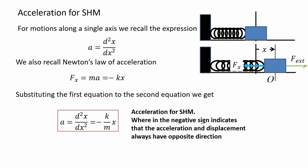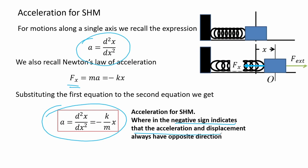We also consider the acceleration for simple harmonic motion. For linear motion along a single axis, we recall the acceleration equation — the second derivative of displacement X with respect to time. Equating this with the restoring force equation, we arrive at an expression describing acceleration for SHM, where the negative sign indicates that the acceleration and displacement always have opposite directions.